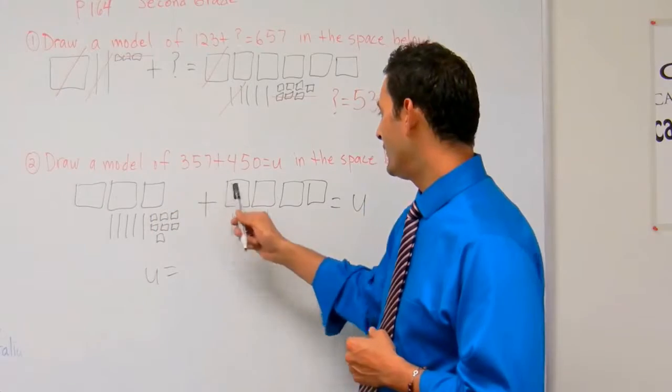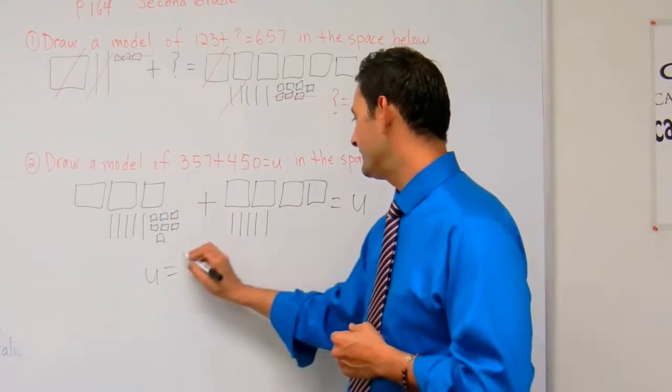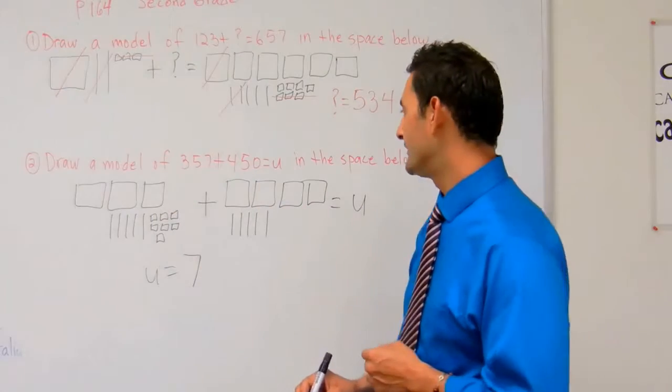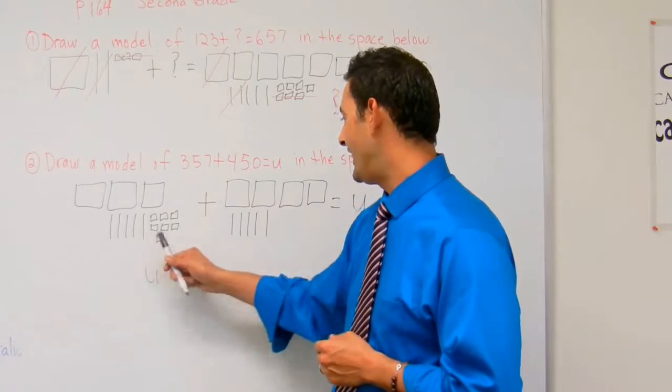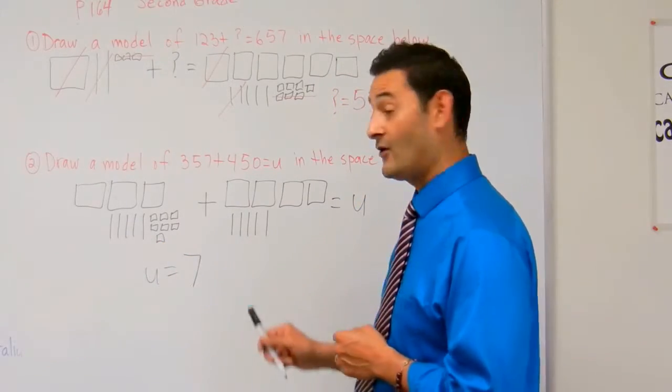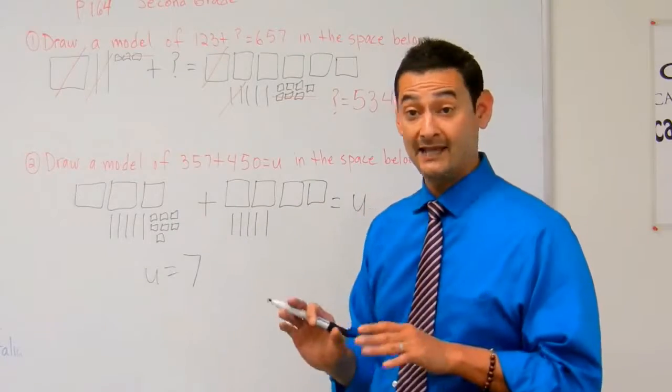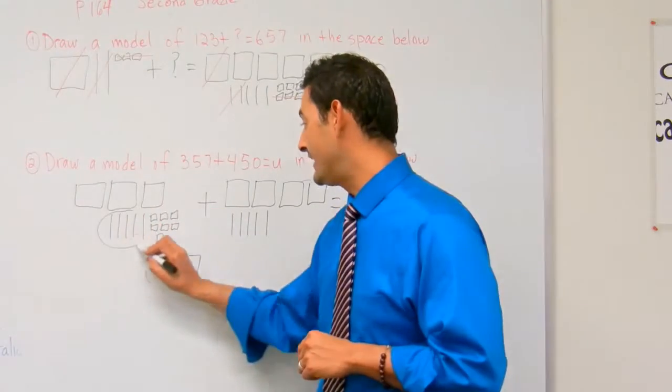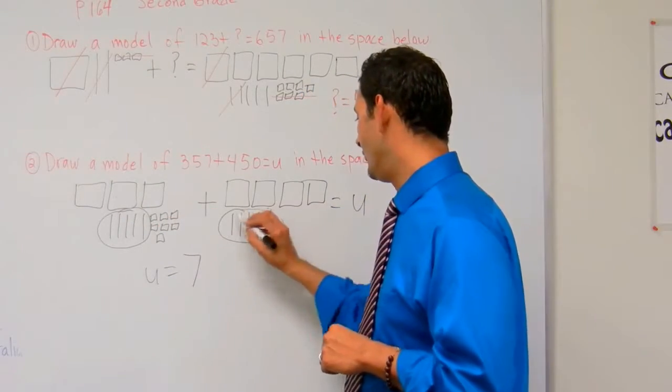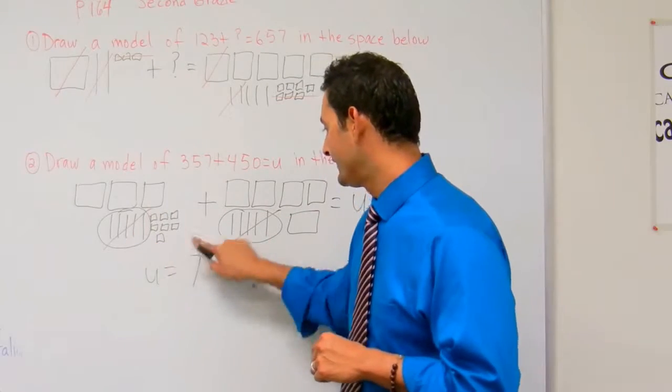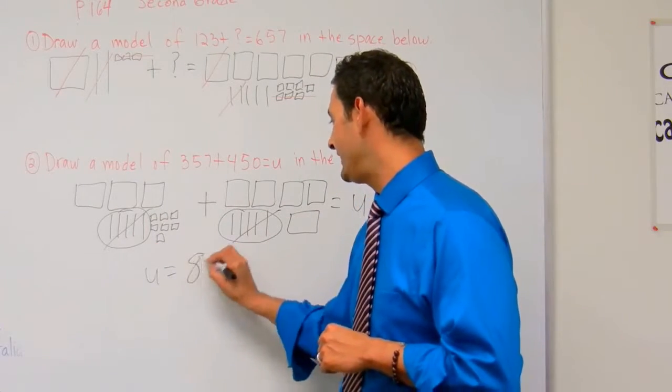100, 200, 300, 400, 500, 600, 700. Now let's see how many bundles of 10 we have: one, two, three, four, five, six, seven, eight, nine, ten. Oh my goodness, we have 10 bundles of 10. So 10 bundles of 10 is going to equal another 100. Let's get rid of that. And now we know that's going to be 800.